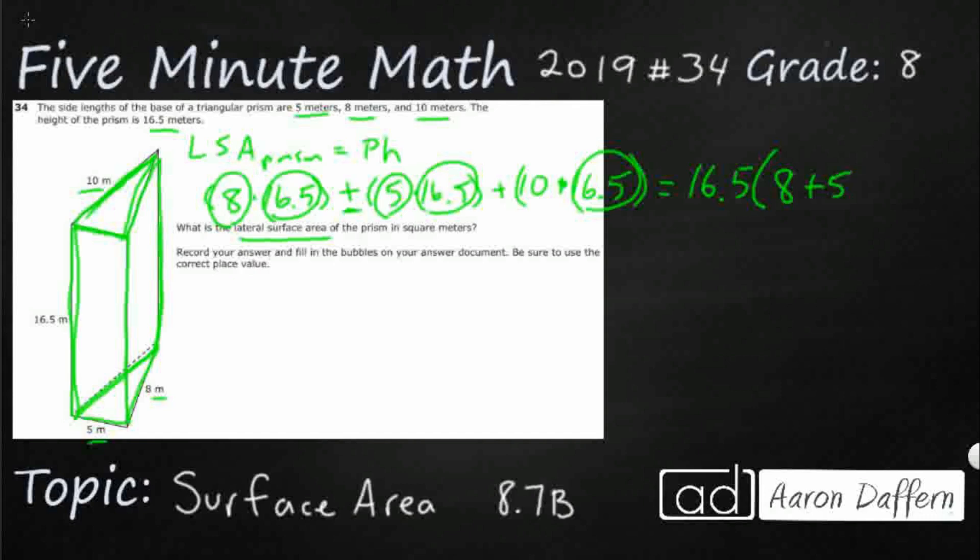Plus a 10. Guess what happens when you do 8 plus 5 plus 10? 8 plus 5 plus 10 are the three sides of my base, which means that's your perimeter, and you're multiplying it by the height. So that's where that formula comes from—you can factor it out, so it's just basic math.